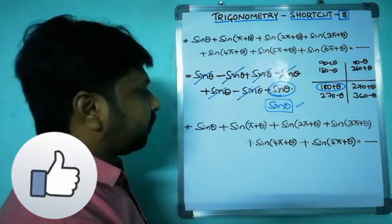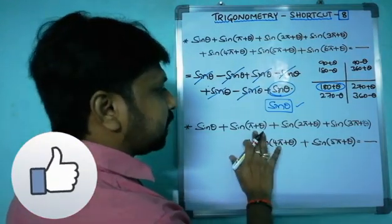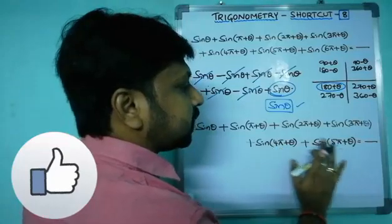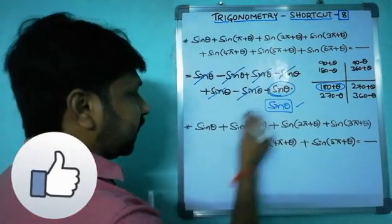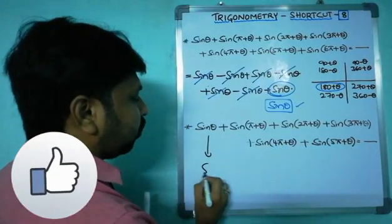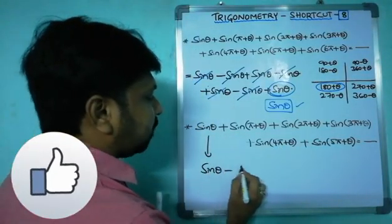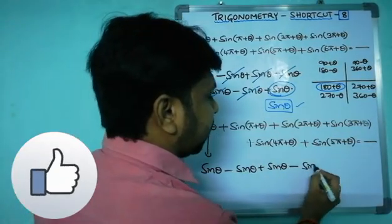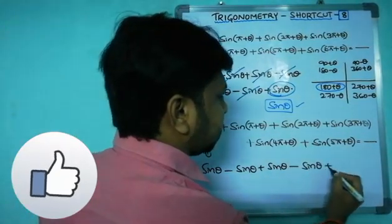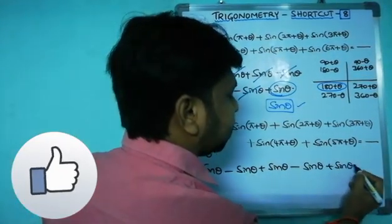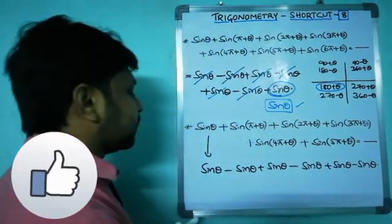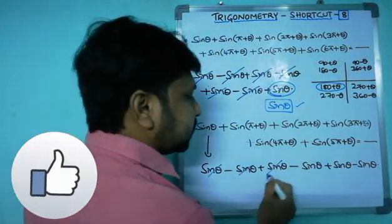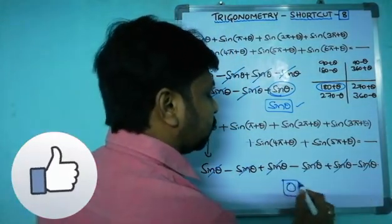Coming to a similar model: sin theta plus sin(pi plus theta) plus sin(2pi plus theta) — applying the same logic, you get sin theta, minus sin theta, plus sin theta, minus sin theta, plus sin theta, minus sin theta. Observing carefully, sin theta minus sin theta cancels, and so on — the answer is zero.